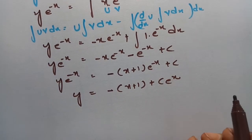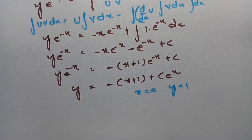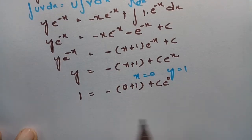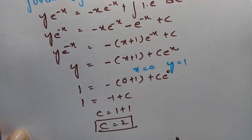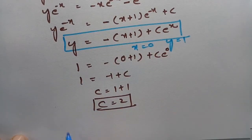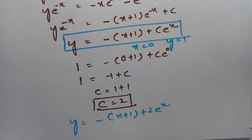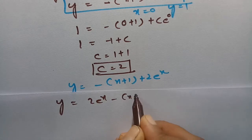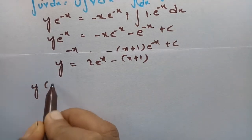So y · e^(−x) = −(x + 1)·e^(−x) + C, which gives y = −(x + 1) + C·e^x. Substituting the initial condition x = 0, y = 1: 1 = −1 + C, so C = 2. The exact solution is y = 2e^x − (x + 1).